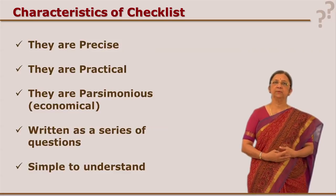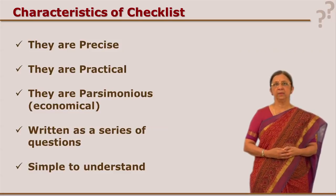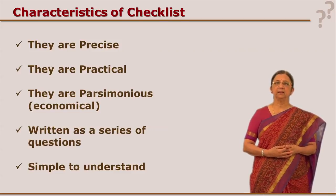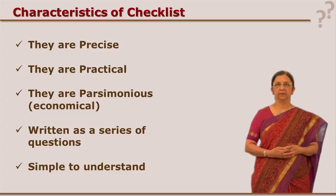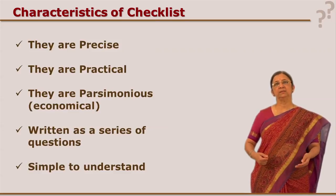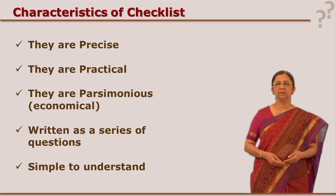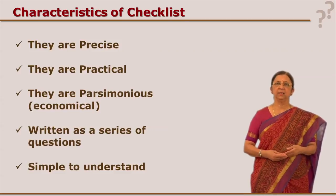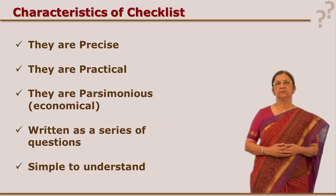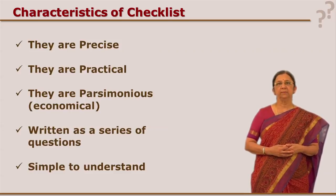The observer should be able to use the checklist the way he or she is expected to use it. The third criterion is that the checklist should be economical. We should not make it unnecessarily lengthy with 90 items when you actually need only 30 items. We have to be very economical in making it precise.